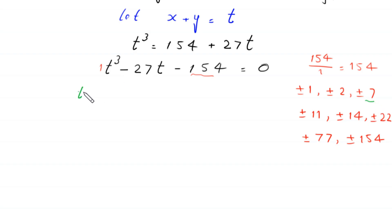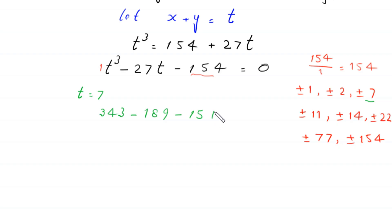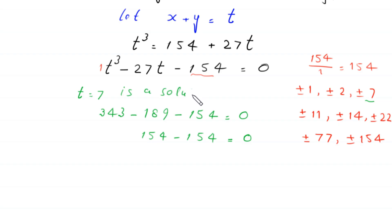If we try t equals 7 in this equation, then 7 cubed is 343, minus 27 times 7 is 189, minus 154 equals 0. Indeed, 343 minus 189 is 154, and 154 minus 154 equals 0. So t equals 7 is a solution, meaning t minus 7 is a factor of this cubic equation.